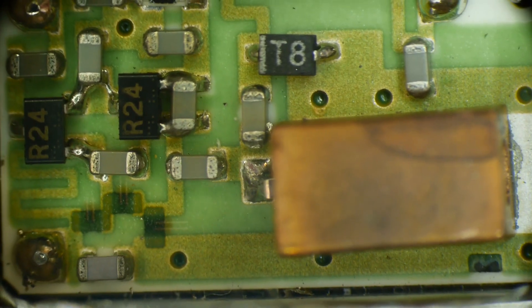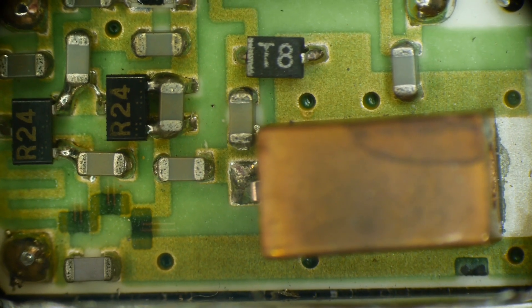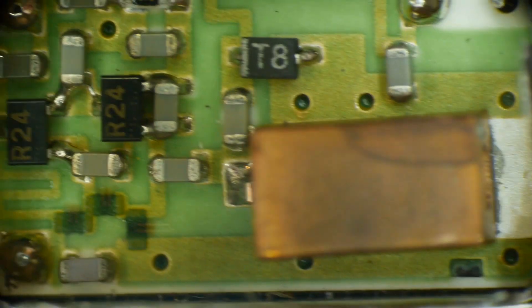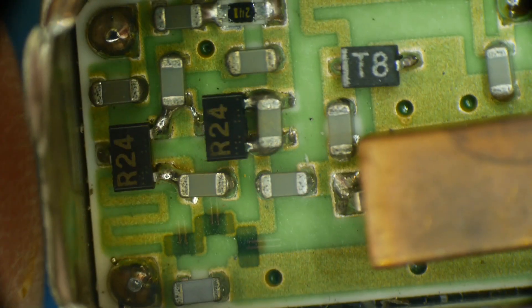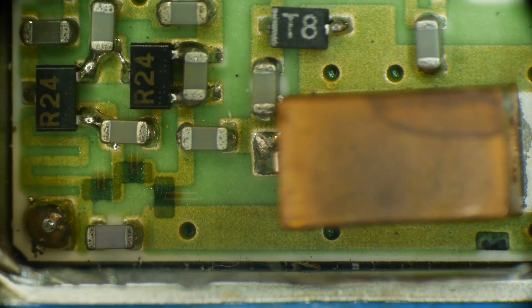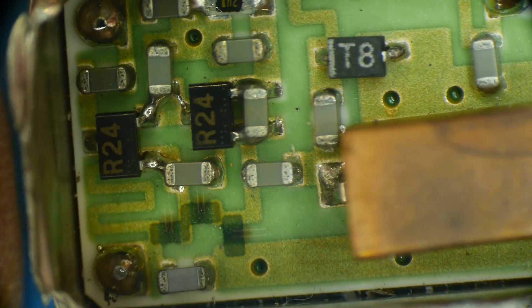If somebody knows datasheets for those things, I don't know exactly what they're called. I don't know how to find a datasheet on them. I've seen a bunch of them, and I believe they're just a simple resonant cavity, but I don't know how to search for it.